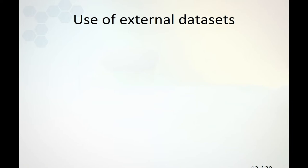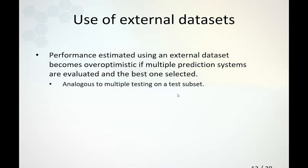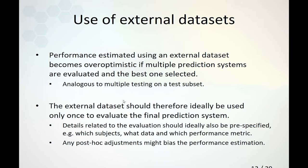But how should these external datasets be used? Just as with the test subset, if we evaluate the external dataset multiple times and then select the best-performing system, it becomes over-optimistic. This is the multiple testing problem again, and performance could be substantially overestimated by selecting a model using the external dataset that performs well. The external dataset should ideally be used only once, at the very end of your analysis, to evaluate how well the system performs.